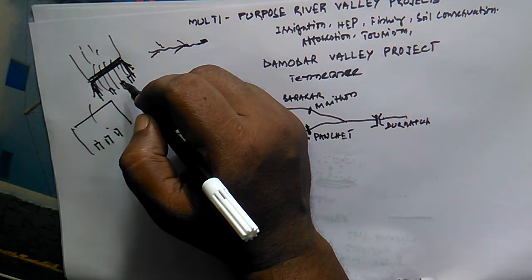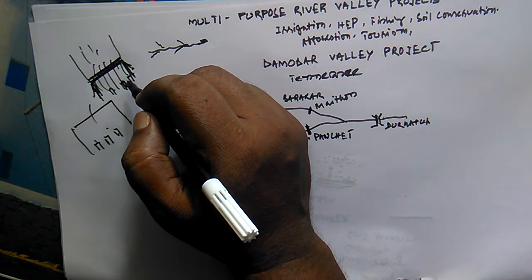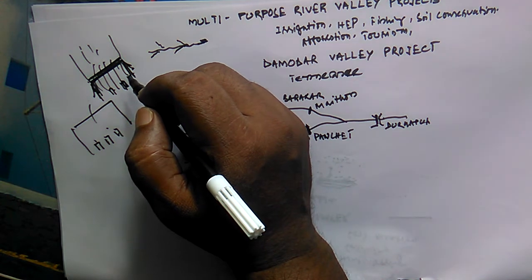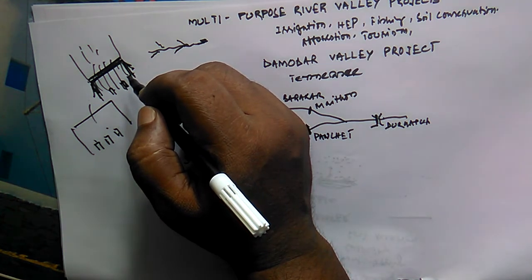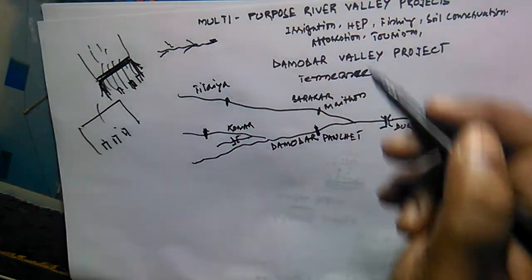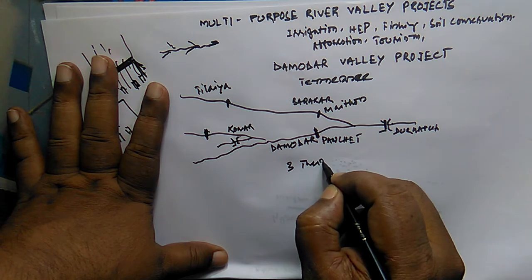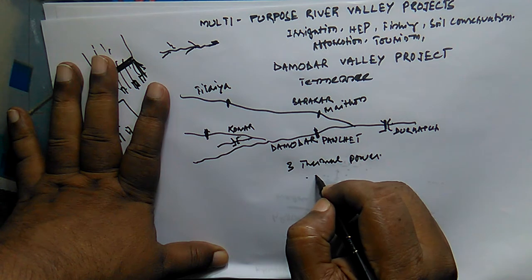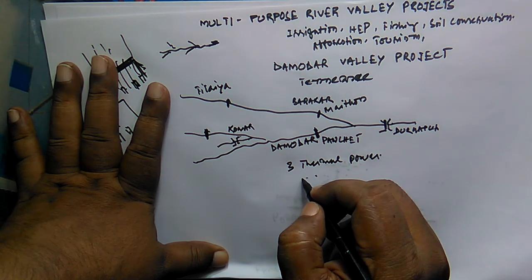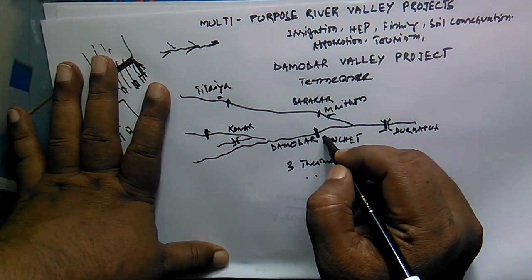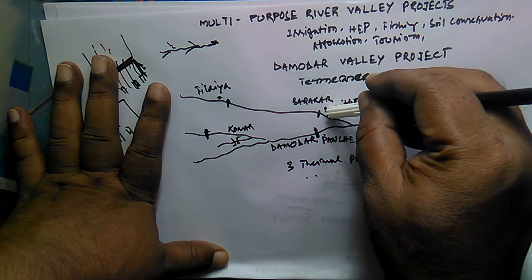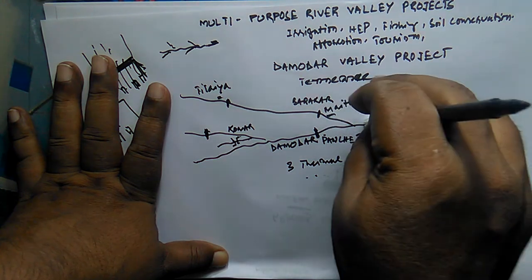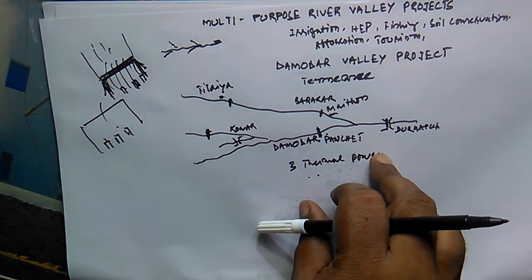The main objectives of the Damodar Valley Project were: flood control, irrigation, generation of power, supply of water for domestic and industrial use, afforestation, and social and economic welfare. At present, there are three thermal power stations at Durgapur, Bokaro, and Chandrapur; three hydel power stations at Tilaiya, Maithon, and Panchet; and one gas turbine station at Maithon.